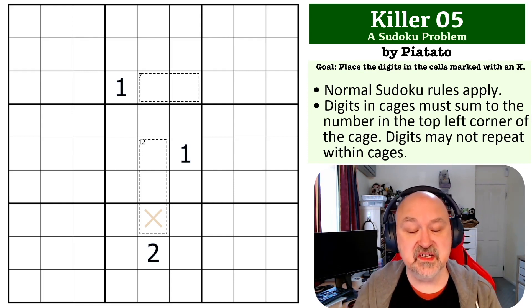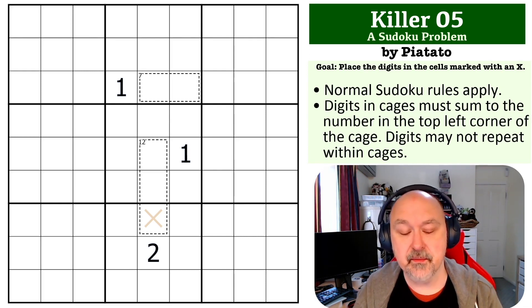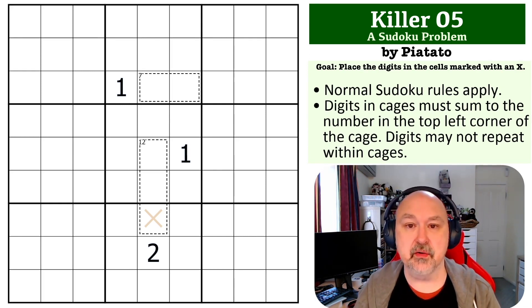So hopefully you'll figure this one. The rules on this one are quite simple. Of course, you need to find the digit that goes into the cell marked with an X, and this is killer. So digits placed in cages must sum to the number in the top left corner of the cage, and digits cannot repeat within cages.